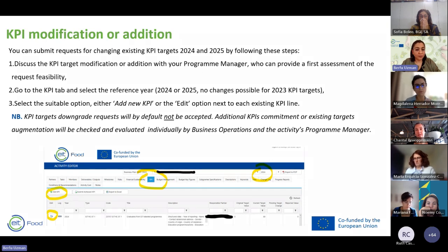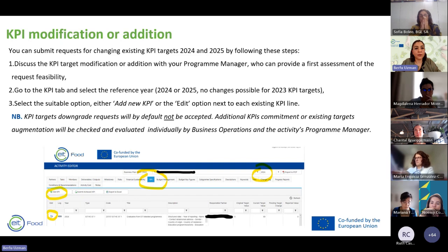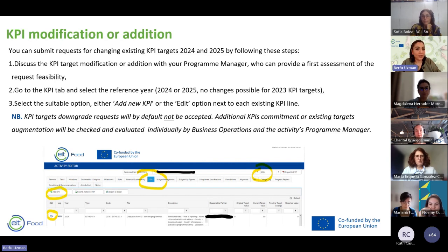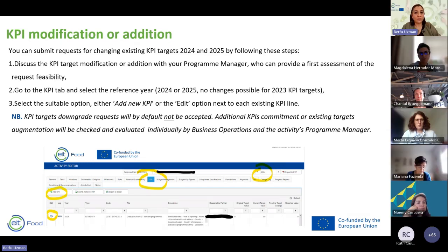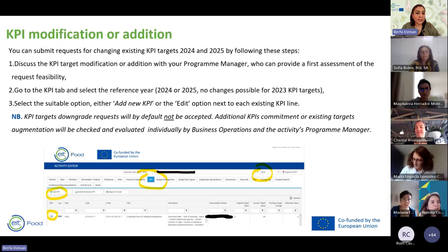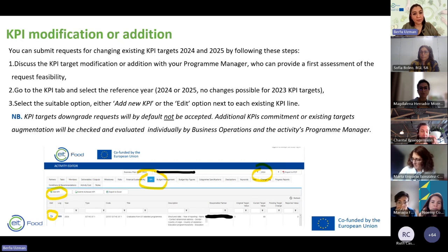KPIs are another item you can modify or add. You can submit requests to change existing targets, but you are not allowed to submit decreases in KPIs or deletions. Discuss KPI target modification or addition with your program manager first. In the KPI tab, select the reference year — since 2023 is gone, only 2024 and 2025 can be amended. KPI target downgrades will by default not be accepted. Additional KPI commitments or existing targets will be checked and evaluated by the Business Operations team and the activity's program manager.